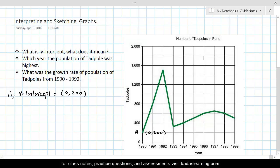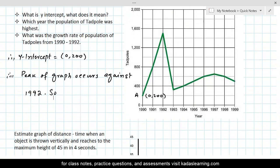And the next question is, which year the population of tadpole was highest? Just look at the peak of the graph, which occurs against 1992. So peak of graph occurs against 1992. So at t is equal to 2, which is 1992, population of tadpoles was highest.